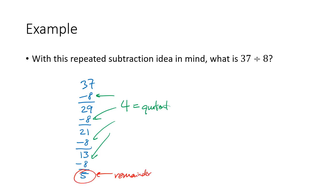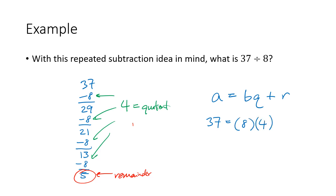We can check that equation we talked about: A equals B times Q plus R. In this case, A is the dividend — the number that we divided into — B was the divisor, which was 8, the quotient Q was 4, and the remainder was 5. And if we check that, it really does work out that 37 equals 8 times 4 plus 5.